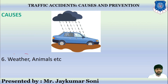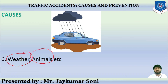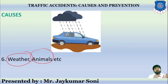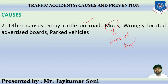Weather also plays an important role. Heavy rain, sleet, or snow makes it difficult for drivers to judge road conditions ahead. Animals straying onto the road — cows, buffaloes, and dogs — are also a hazard; if an animal suddenly appears on a high-speed road, a driver swerving to avoid it can cause an accident. Other causes include stray cattle, large mobs of people, and wrongly located advertisement boards near vehicles.